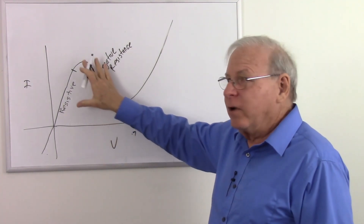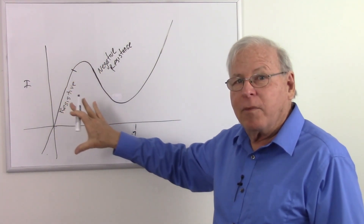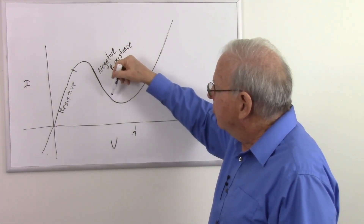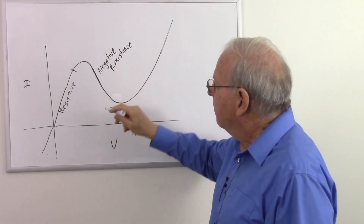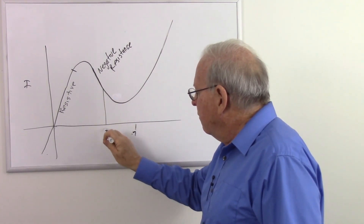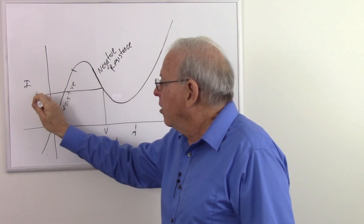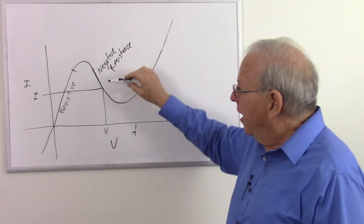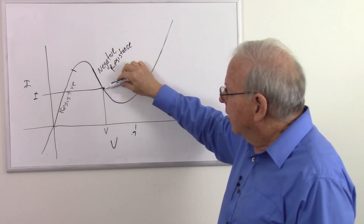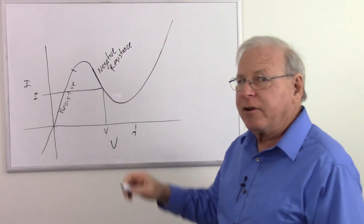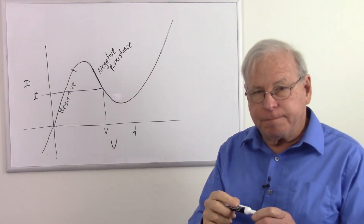So we have weird things going on. But once again, how do we find out what these resistances are? By applying voltage and current and applying Ohm's law — we can calculate what that resistance is at that particular voltage.